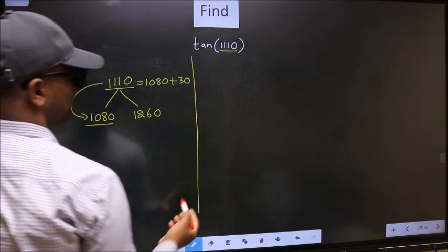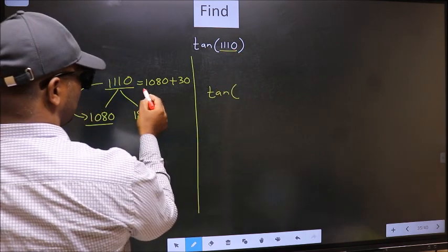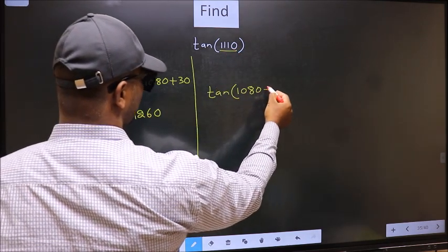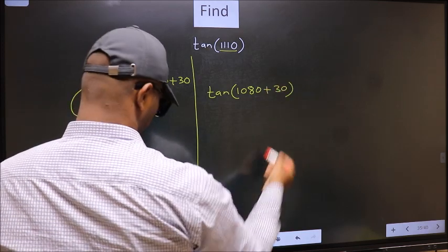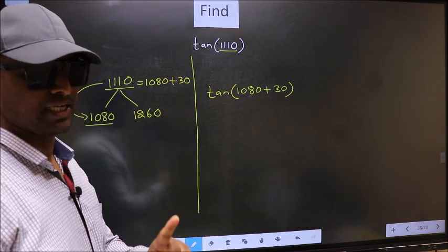So this will become tan. In place of this, now we write 1080 plus 30. This is your step 1.